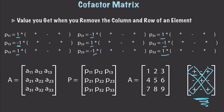Now I'll plug in values based on what we covered. This becomes 5×9 minus 6×8, and if we get that result and multiply it times one, that gives us our final answer. So calculating P11 and multiplying by positive one gives a value of negative 3. That's the first part of calculating our cofactor matrix.